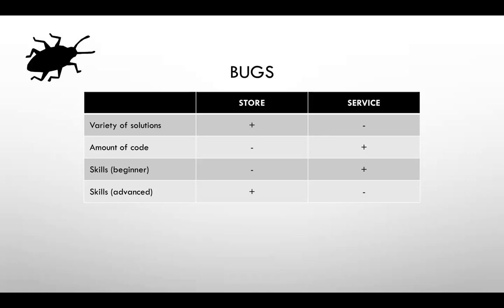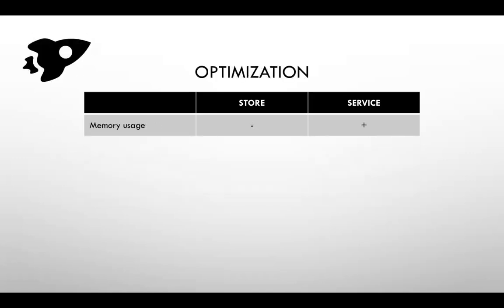Regarding optimization, I couldn't find much data and didn't notice a significant difference in application speed. The one thing I found is memory usage — with a single store for the whole application, in a single-page application, all information accumulates in the store as the user navigates. You need to actively clean up unused data, which requires deliberate effort. With services, this is less of a problem — services tied to specific parts of the application don't load data for parts that aren't used.